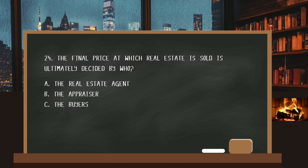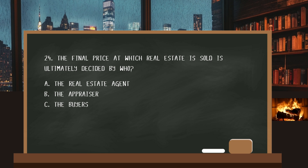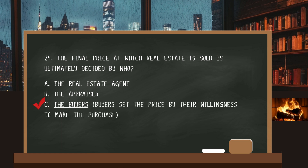Number twenty-four. The final price at which real estate is sold is ultimately decided by who? The answer is C: the buyers. Buyers set the price by their willingness to make the purchase.